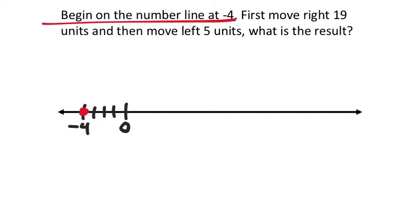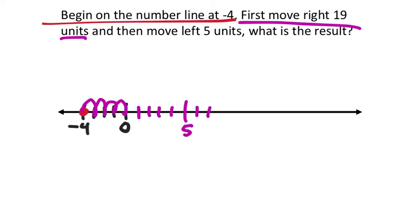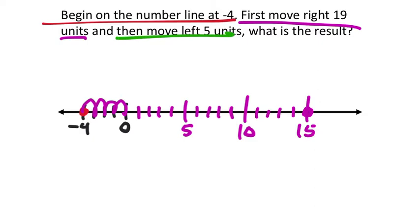Starting at negative 4, marked in red, it says first move to the right 19 units or spaces. We need to get through 0 — that's 4 spaces — and then continue counting up to 19, which puts us at 15. But then it says move left 5 units. So from 15, that purple dot, we move to the left: 1, 2, 3, 4, 5 — and that ends at 10. So the result is 10, and that's all you need to write in the box.